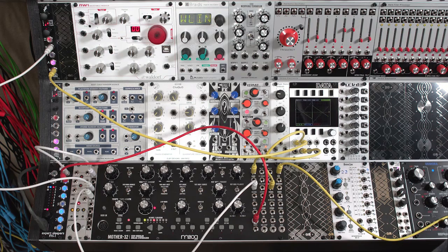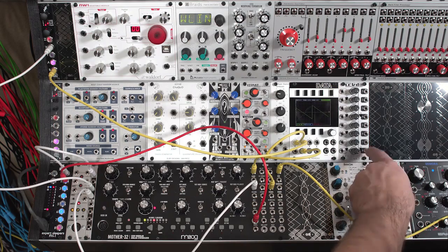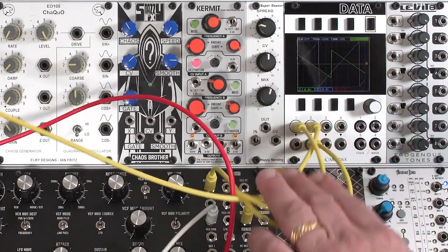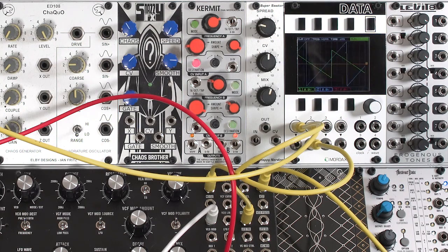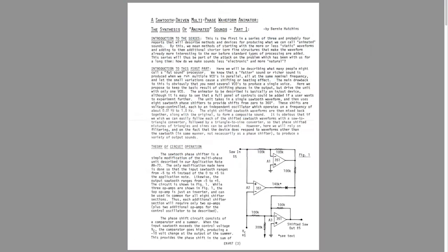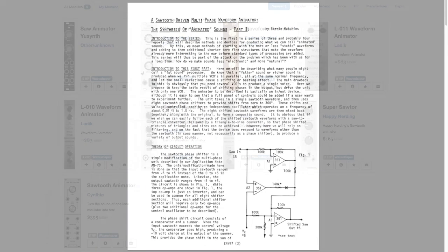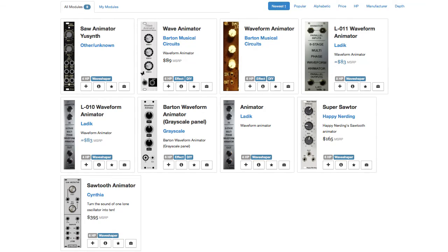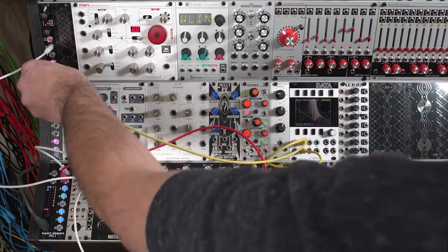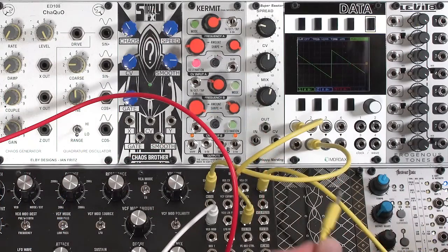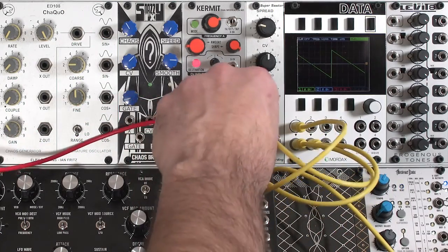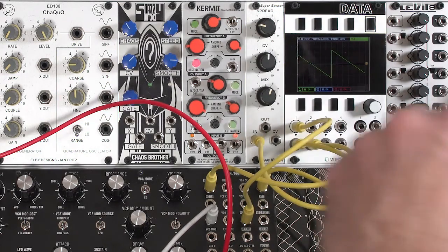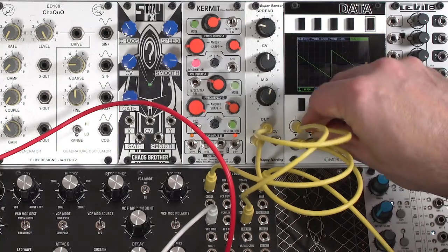Now let's say you want an even fatter sound than that. You could add more oscillators — you'd need a mixer to combine them and bring them back into the Mother 32. Or you can use a waveform animator. I happen to have a Super Saw Tour by Happy Nerding here, based on the design of the Roland JP-8000 and 8080. There are other choices available, some based on the design originally shown by Bertie Hutchins in Electronotes. They run anywhere from under $100 to a few hundred dollars. To connect the Super Saw Tour, I'll take a copy of the sawtooth running through the Disting and send that to the input on the Super Saw Tour, then take the output and run that to my input on the Data.